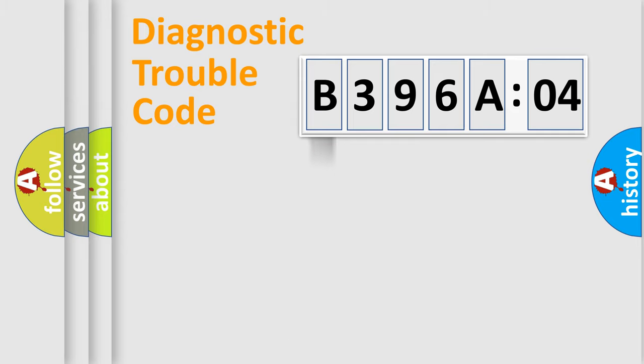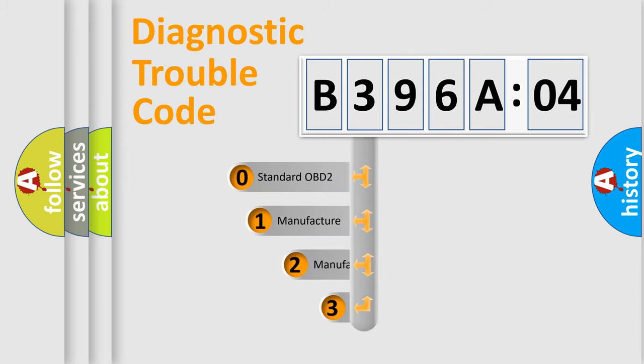Powertrain, Body, Chassis, Network. This distribution is defined in the first character code.